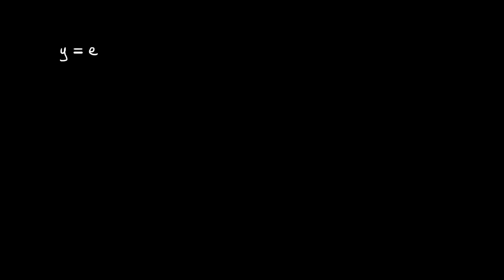In the next couple of videos we're going to be looking at how to differentiate different types of functions other than polynomials, and we're going to be starting off with the exponential function y equals e to the power of x. This is a very special function because it differentiates to give itself — that's really what defines e to the power of x.